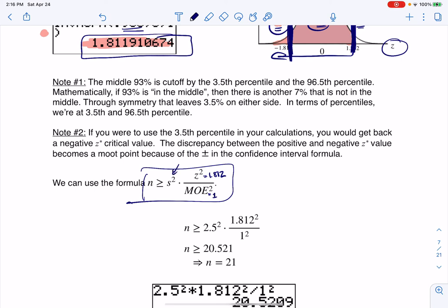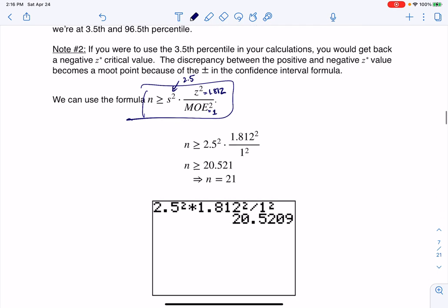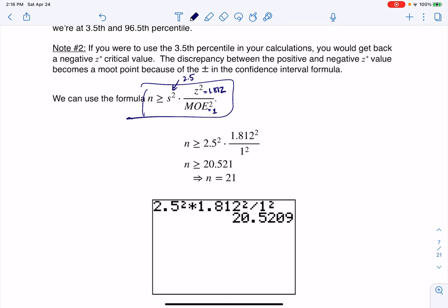If we look at the problem, it said that the standard deviation was 2.5. So when I plug all of that in and I crunch it, I find out that I needed a sample size greater than or equal to 20.5. And since our sample size has to be a whole number, I need it to be at least 21 young adult males in my study.